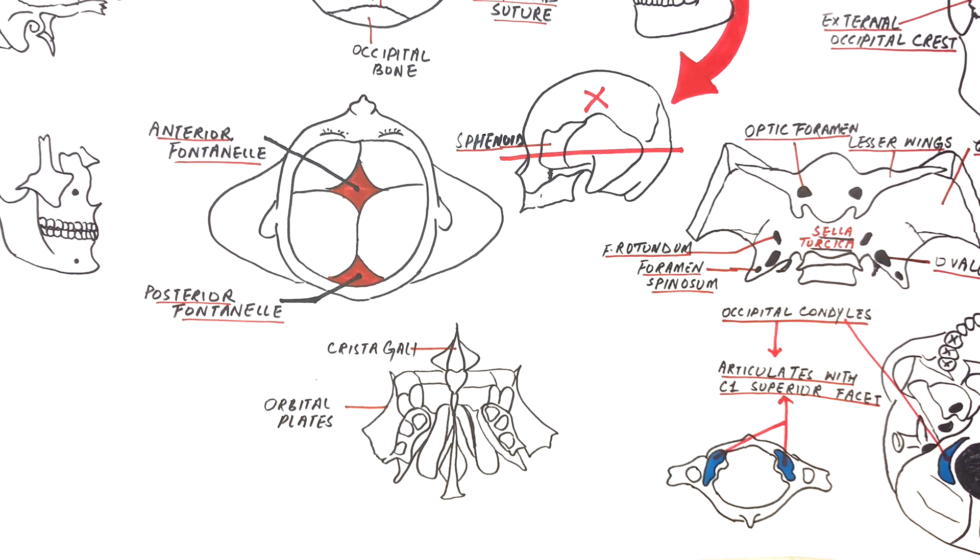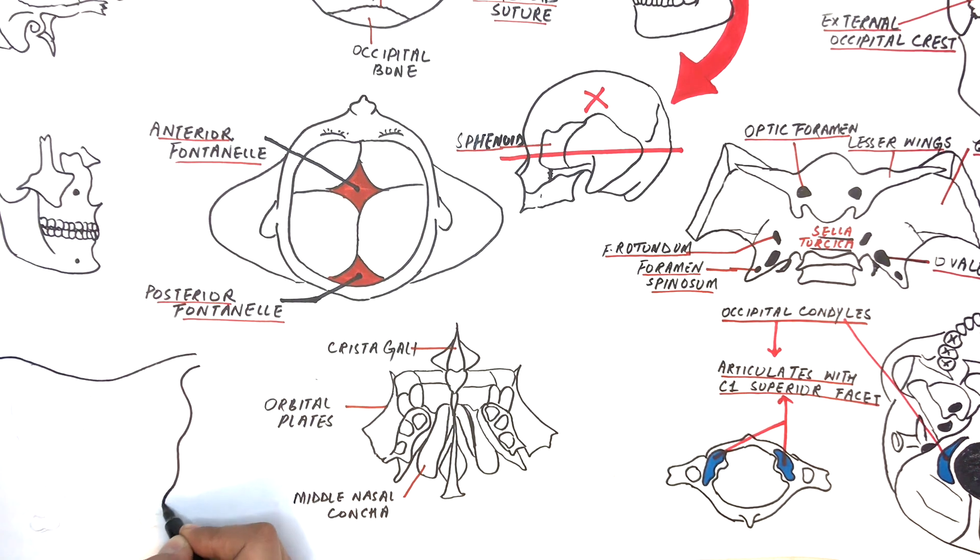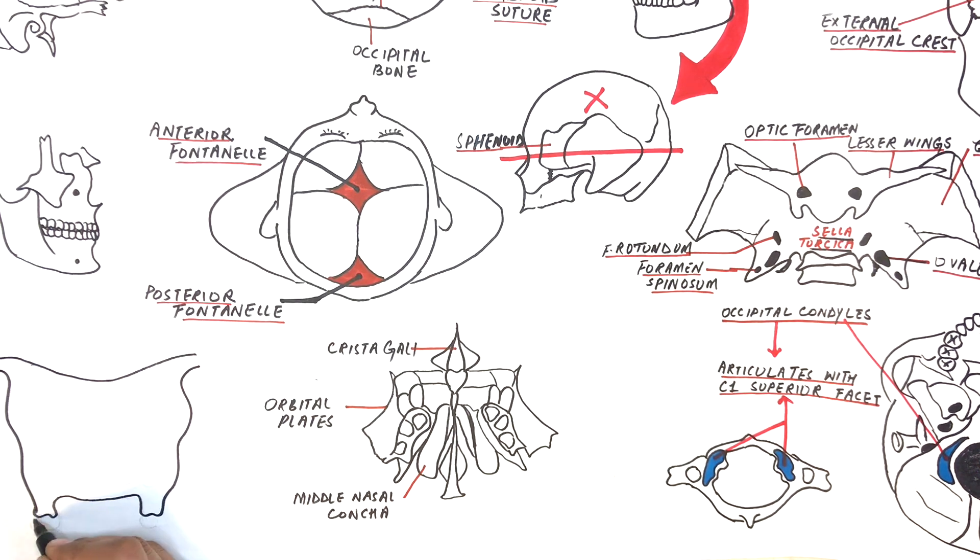Laterally it has the orbital plates, which make up the medial walls of the orbits, the middle and superior nasal conchae, which are the bony projections within the nasal cavity and function in humidifying and warming the inspired air. The conchae can be observed on a coronal cross section of the skull.